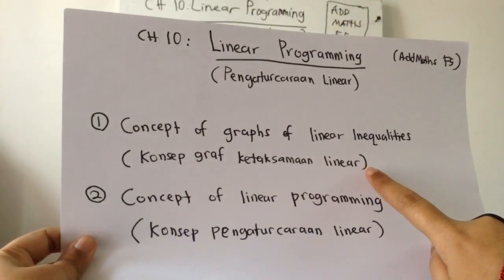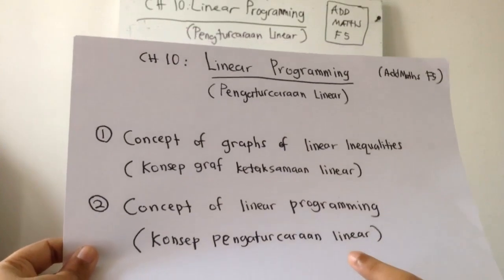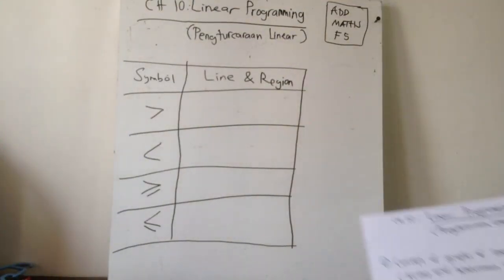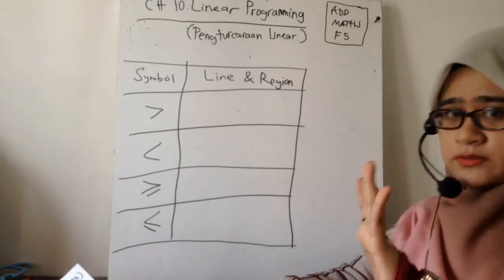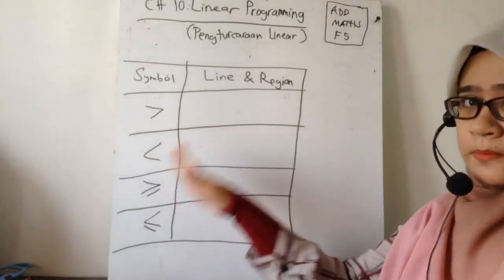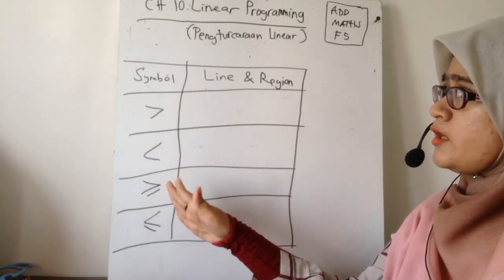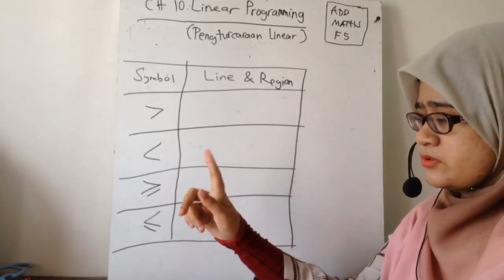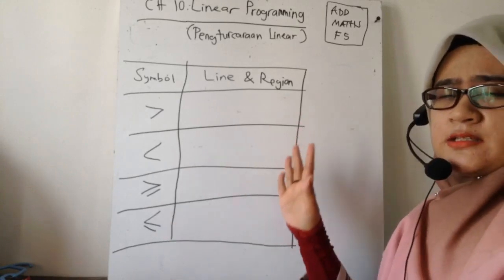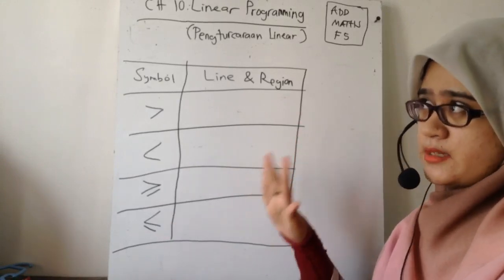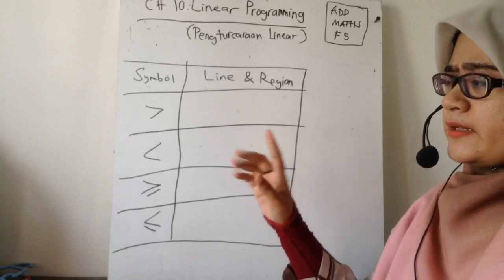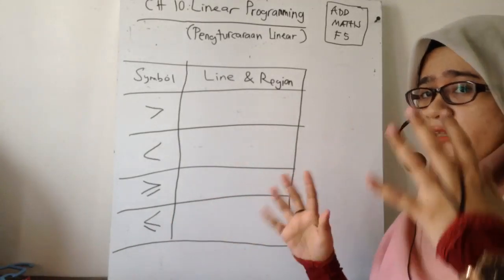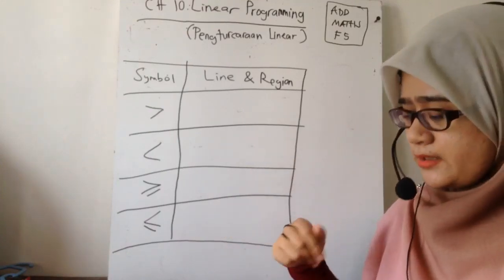Hari ni kita cover subtopik pertama, esok kita cover subtopik kedua. Untuk yang pertama ni, kita just nak faham konsep je. Konsep simbol yang ni kita dah pernah tengok dah. Just sekarang kita nak tunjukkan macam mana perwakilan dia melalui line. Tapi soalan ni dia takkan keluar - ini just konsep basic. Nanti subtopik kedua tu, dia start nak lakarkan tu yang akan keluar. Yang ni macam mana nak lakarkan, you kena tahu basic dulu, then baru kita boleh proses yang second.